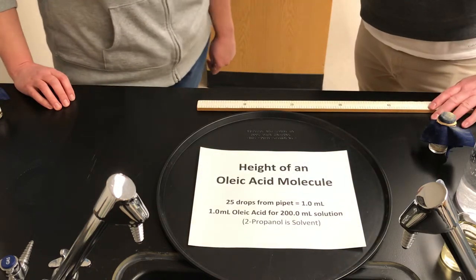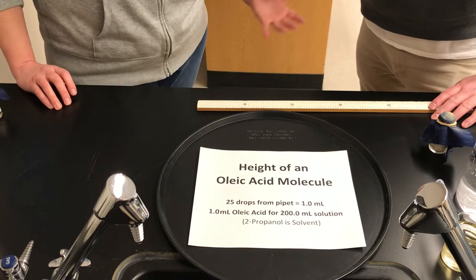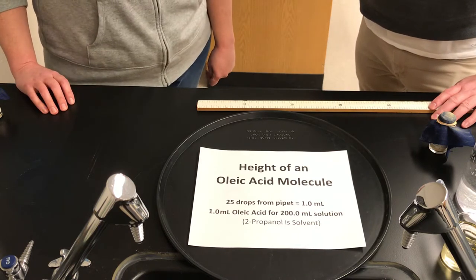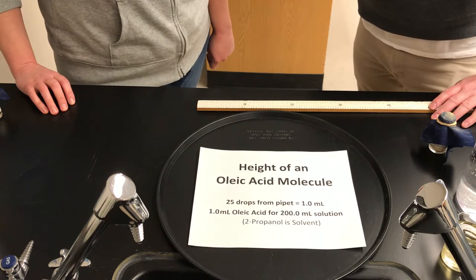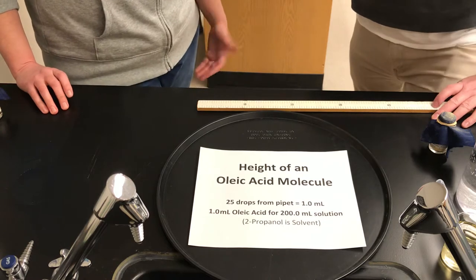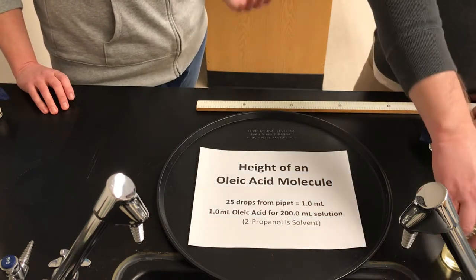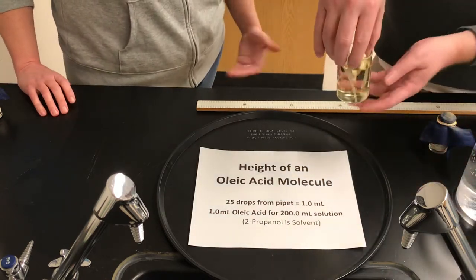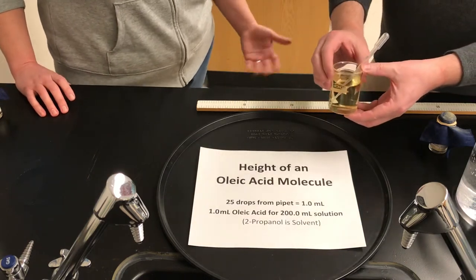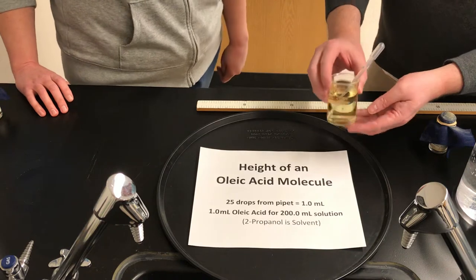So the molecule that we're going to be looking at or working with today is called oleic acid. Oleic acid is a type of fatty acid. In particular, the solution that we're going to be using is made up of one part oleic acid for every 200 parts of alcohol. The alcohol that we're using as a solvent here is 2-propanol.